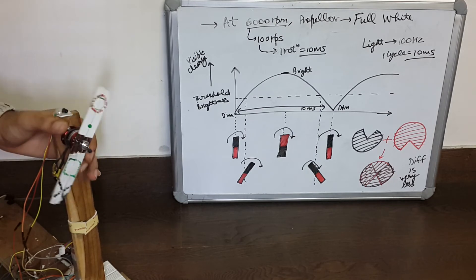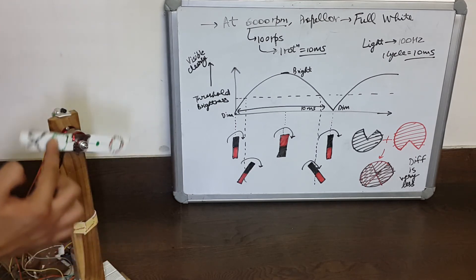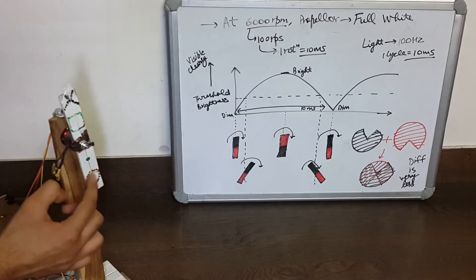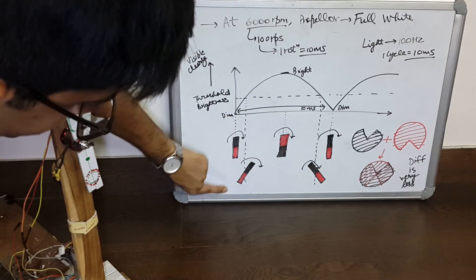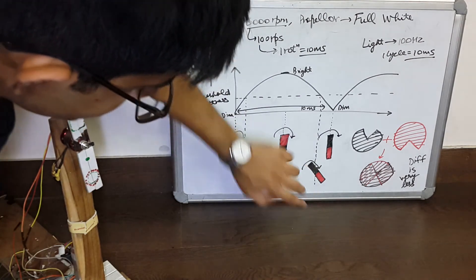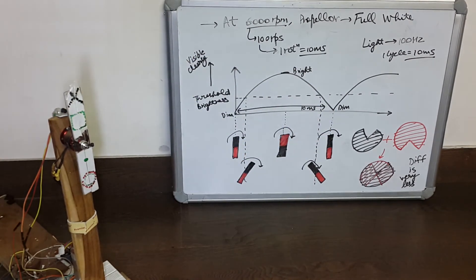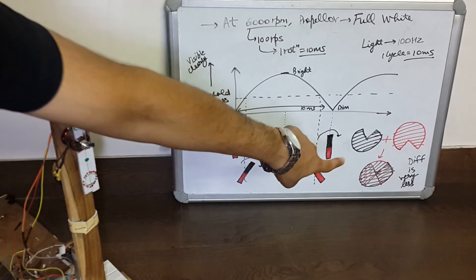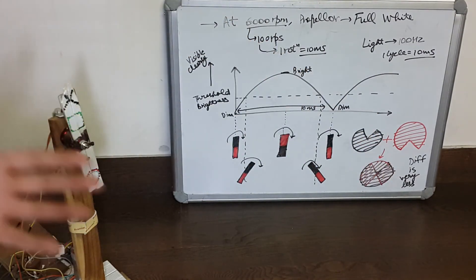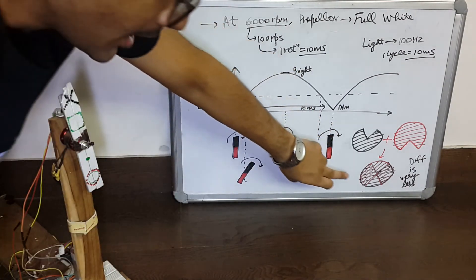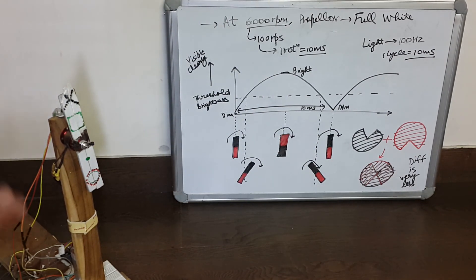The propeller moves from this position to this position while the brightness is above the threshold. The black part illuminates the lower part of the circle and the red part illuminates the upper part of the circle. After 10 milliseconds the propeller moves back to its original position. The net image is that the full circle is illuminated, and these two parts are illuminated twice. But the difference between the parts illuminated twice and the parts illuminated only once is very small, so the stroboscopic effect is very hard to see.